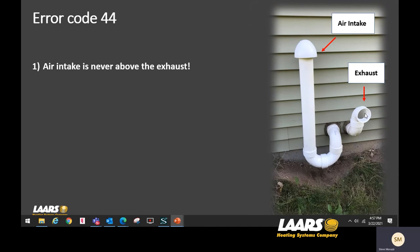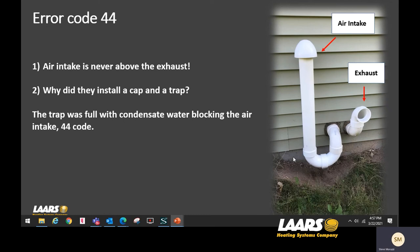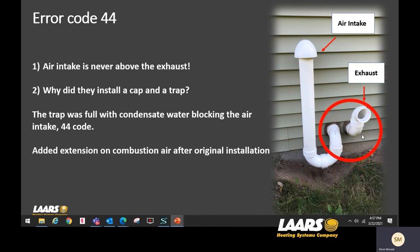Here's another job where again the exhaust was down and the combustion air up top — that's wrong. Why were there two 90-degree fittings creating a trap? That trap was getting full with condensate, blocking the combustion air intake and giving a 44 error code. During installation, the inspector noted they weren't 12 inches off the ground — you're supposed to be 12 inches above anticipated snow level. So they added two 90s, an extension piece, and a cap. Exhaust gases traveling up got drawn back in and condensed inside the pipe, filling it with water and giving a 44 error code. Inspect the vents.